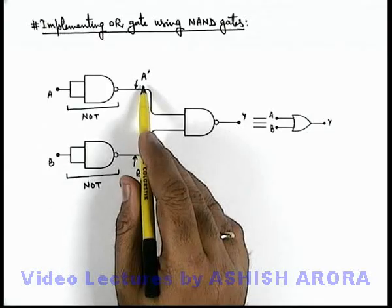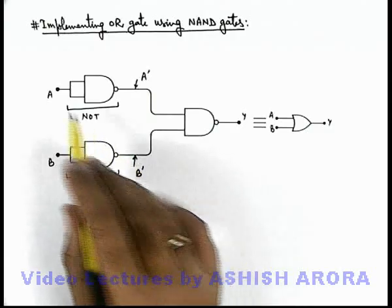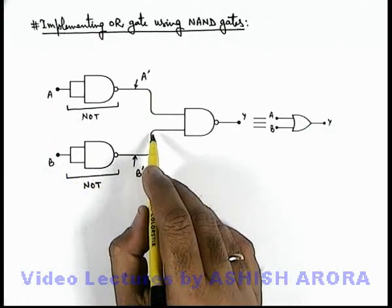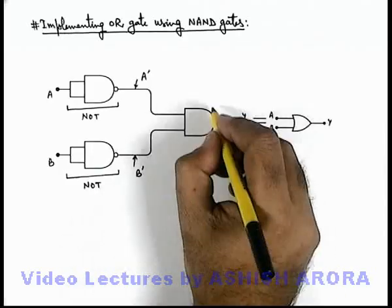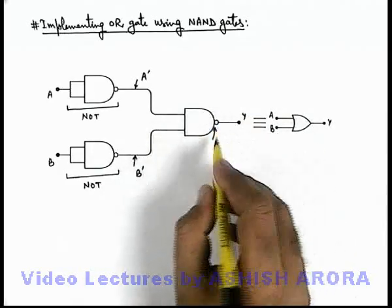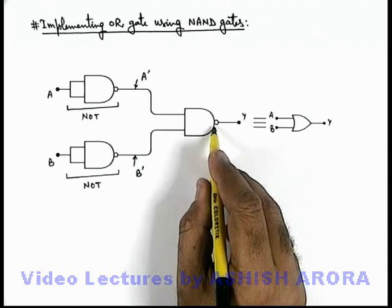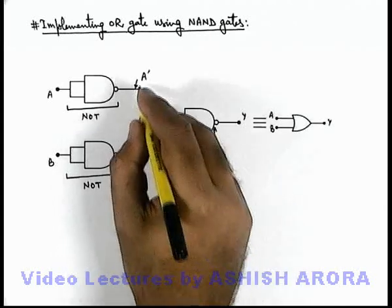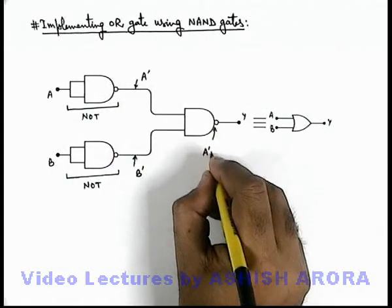And this A prime and B prime inverted signals of A and B are used as input to another NAND gate. And at this point right after the AND logic operation of NAND gate, we will get the signal as A prime B prime.